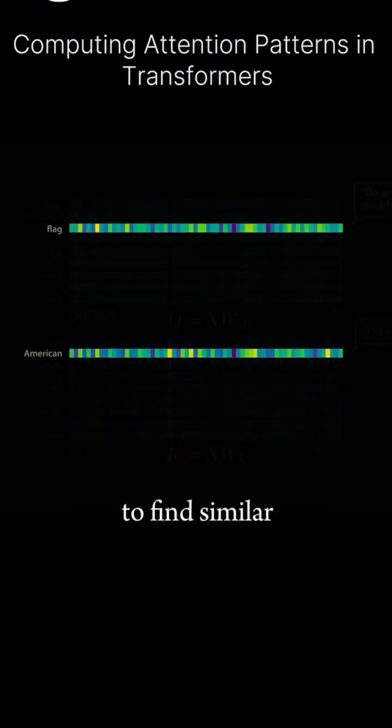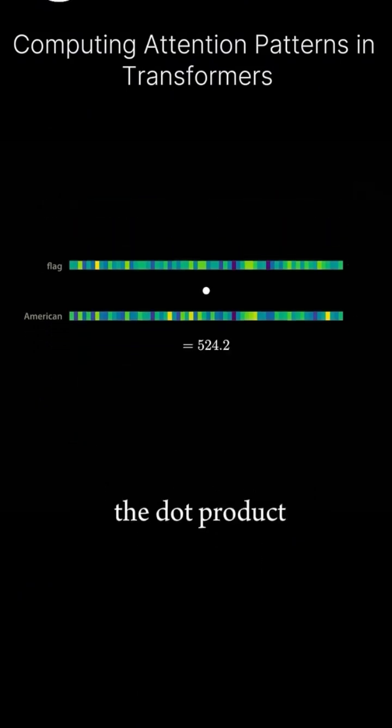Mathematically, to find similar keys and queries, we can take the dot product of the keys and queries for each possible pair of our nine tokens. Similar keys and query vectors will generate high dot products.